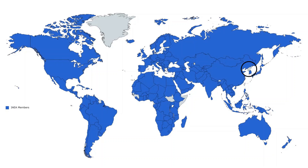One of those exceptions is North Korea, although North Korea was once a member of the IAEA. In 1994, there was a falling out between the nonproliferation regime and North Korea when it was alleged that North Korea was violating some of its safeguard agreements. North Korea pulled out of the IAEA in response and has never returned.